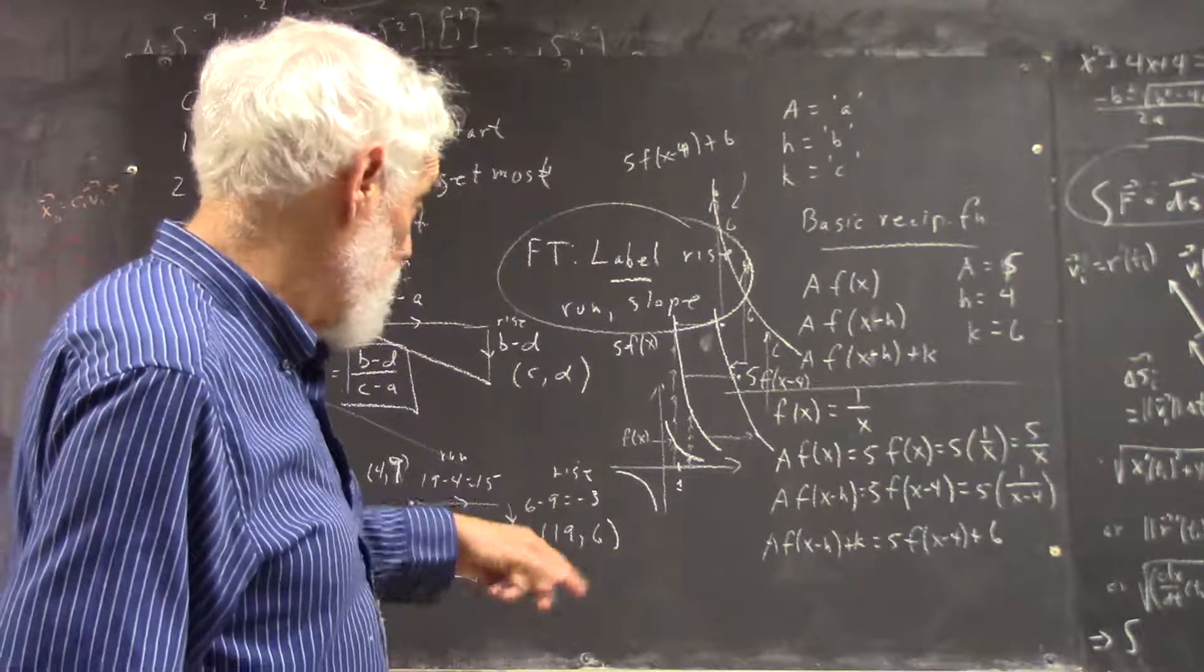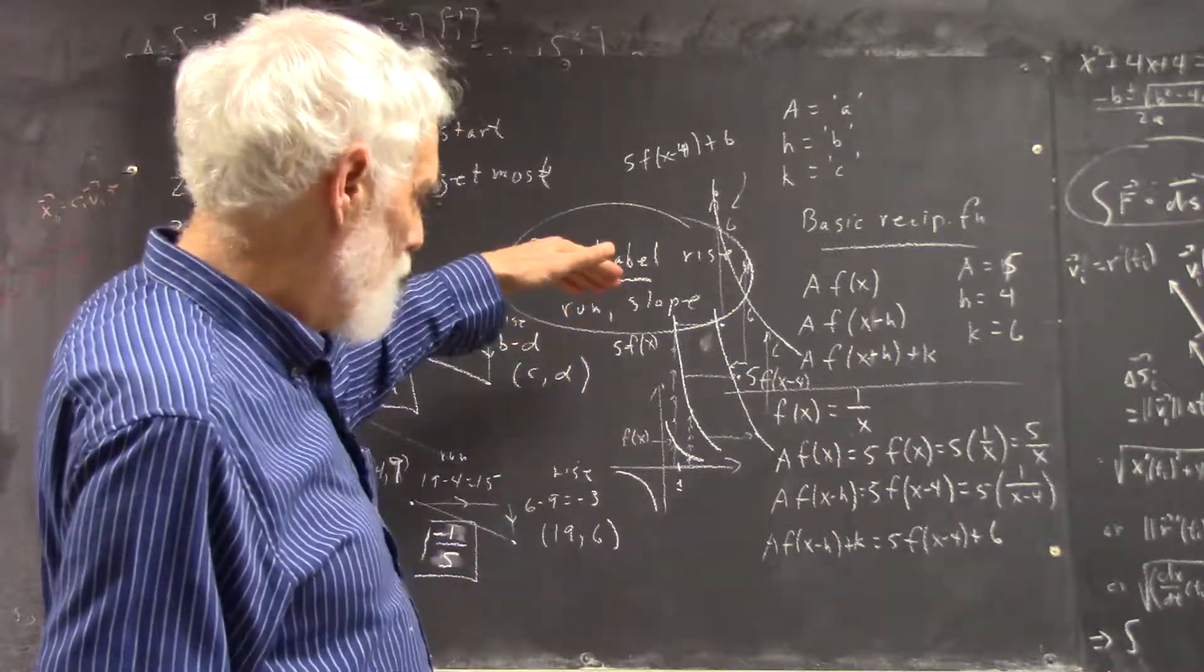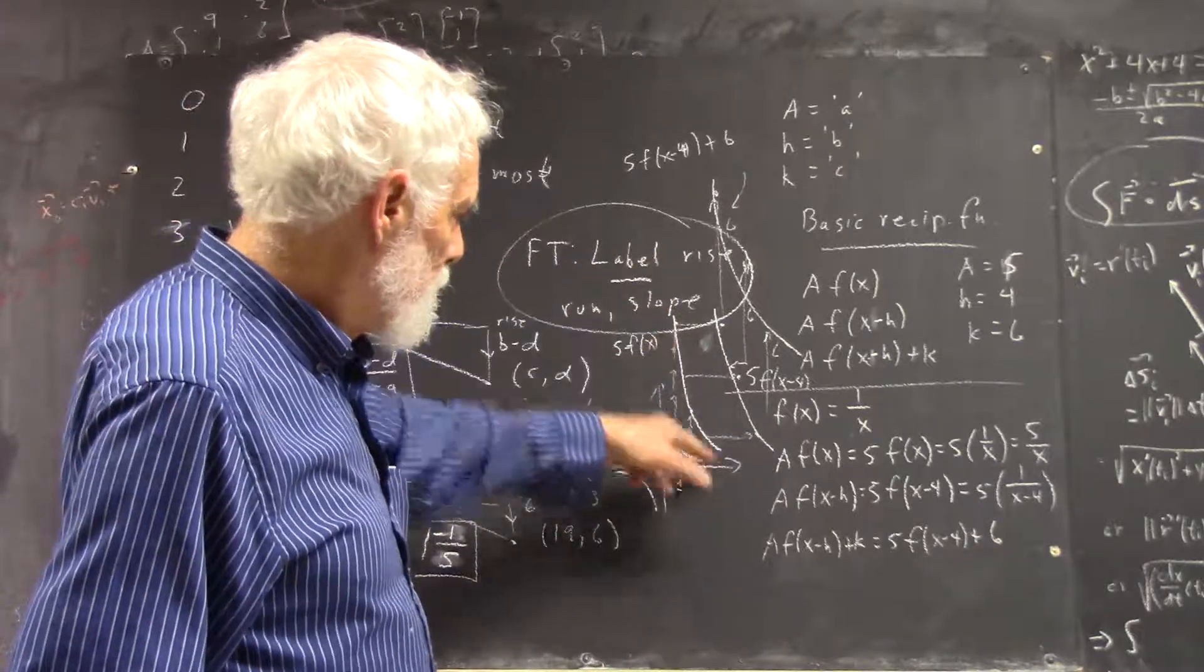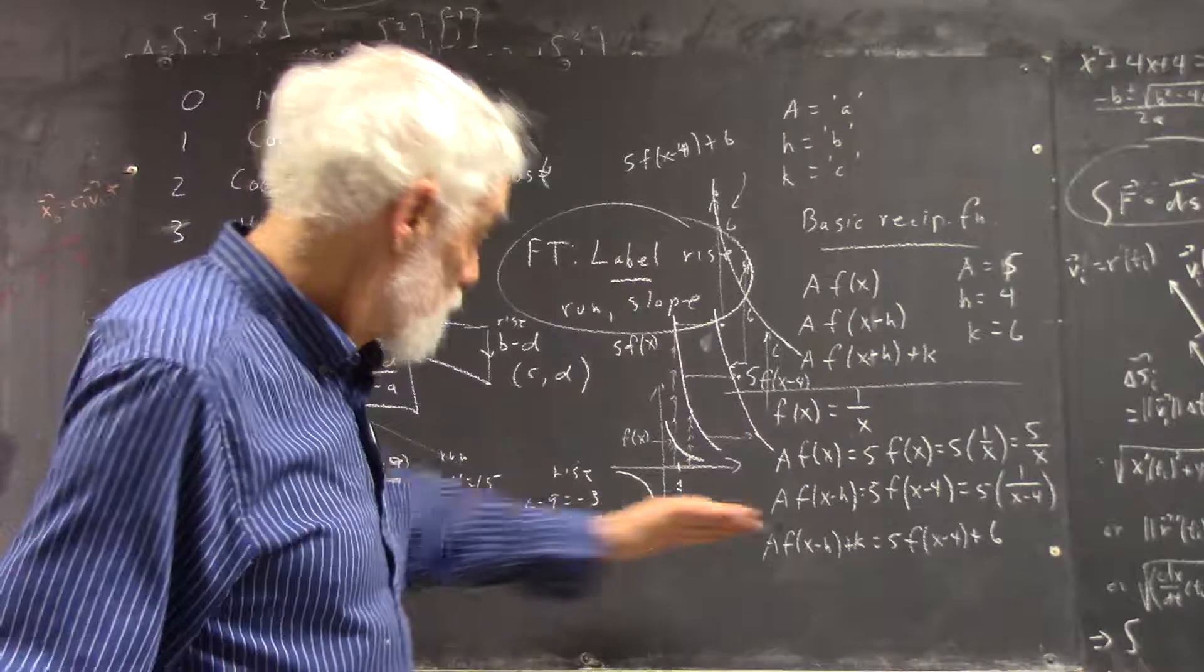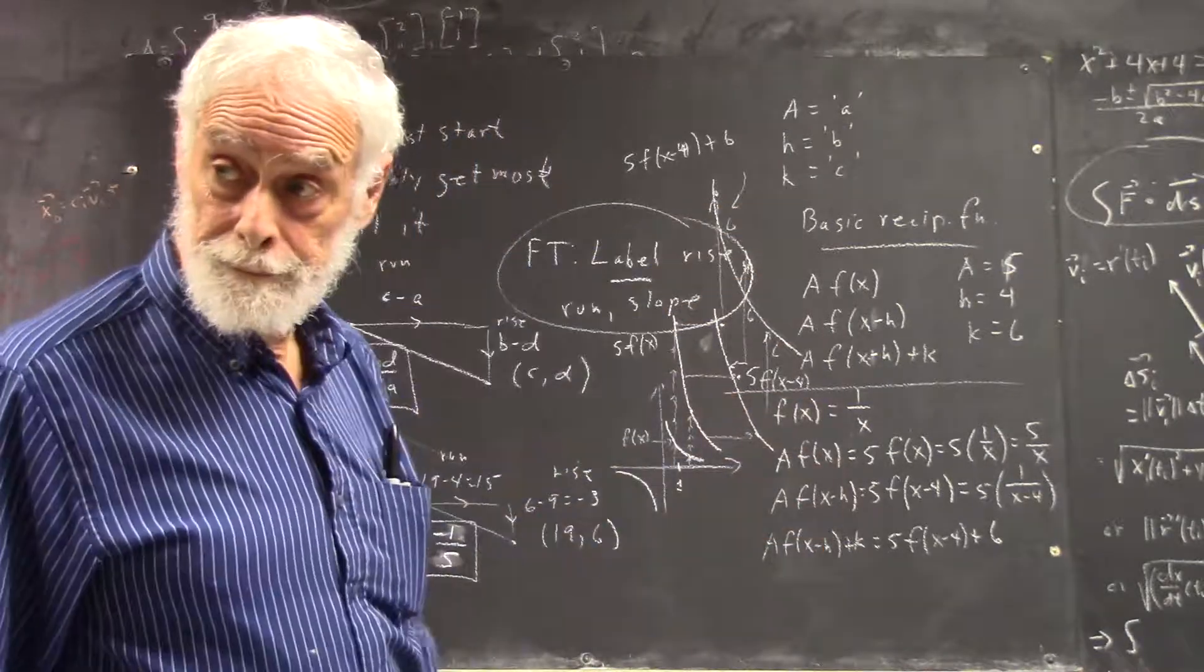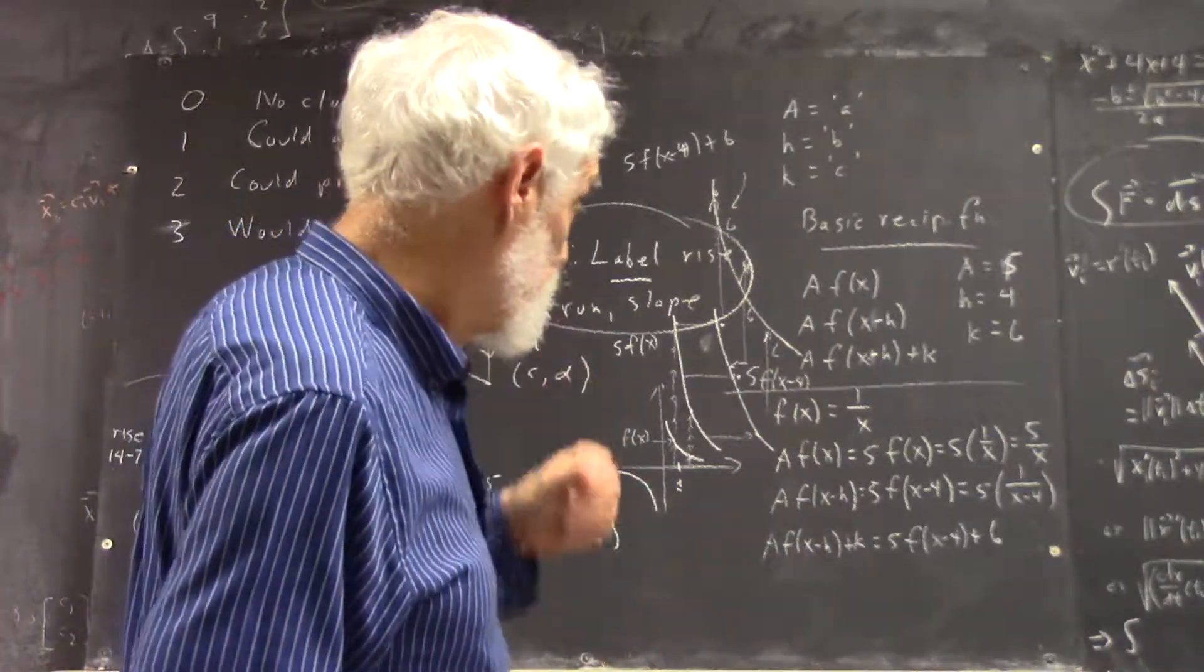And, of course, you do the same thing down here. You move every point twice as far or 5 times as far from the axis. It's going to be just the upside-down version of this. Okay? Then you move it to the right, and you move it up. Okay.